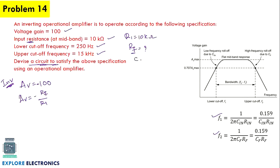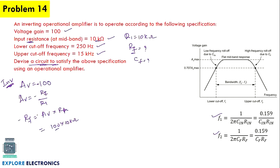We need to calculate both Rf and Cf. The input resistance R1 is given as 10 kΩ. Rf is not given, so we calculate it. Rearranging the gain expression: Rf equals |Av| times R1 equals 100 times 10 kΩ, giving Rf equals 1000 kΩ, which is 100 kΩ.